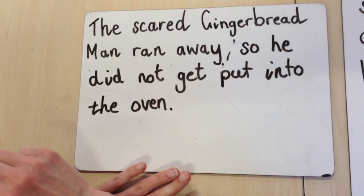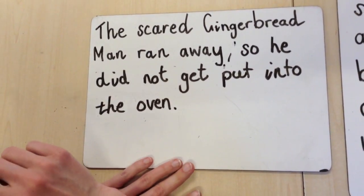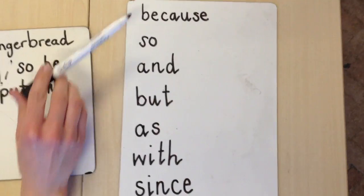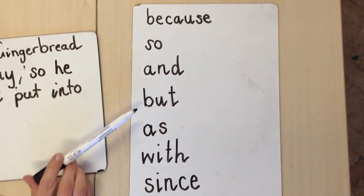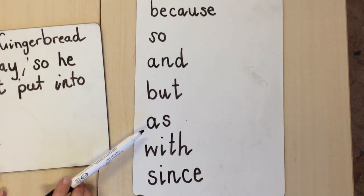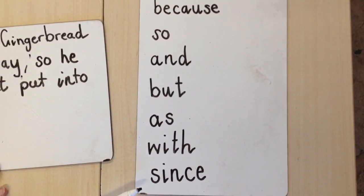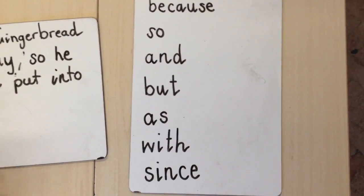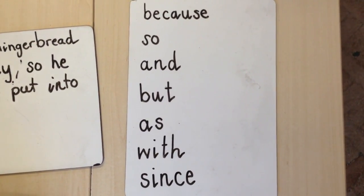There are many different ways that you can extend your sentence with connectives. Here are some others: because, so, and, but, as, with, and since. They will all improve your child's sentences.